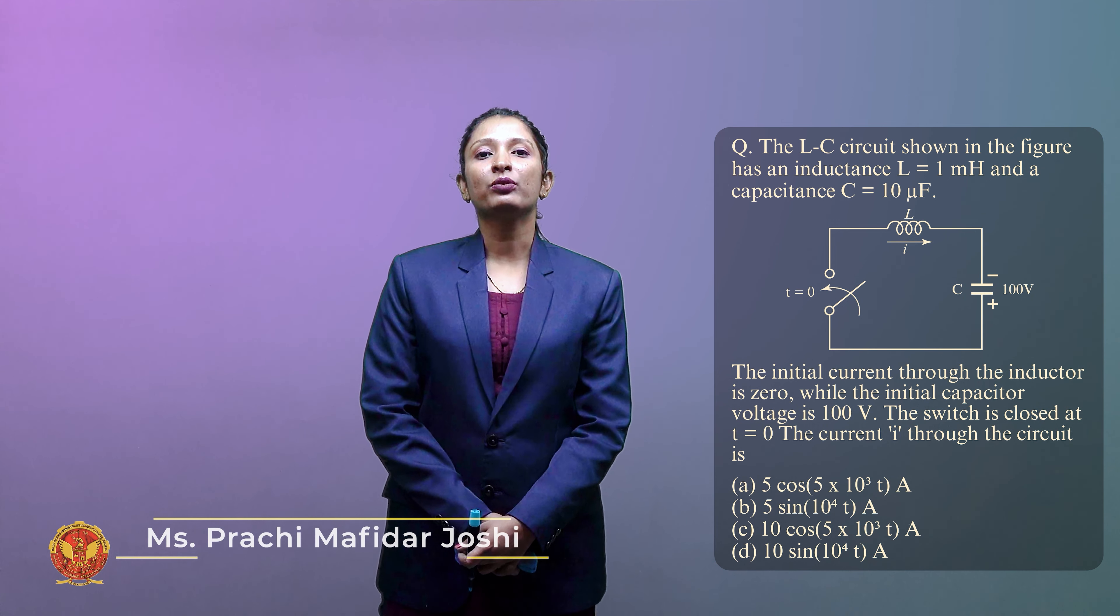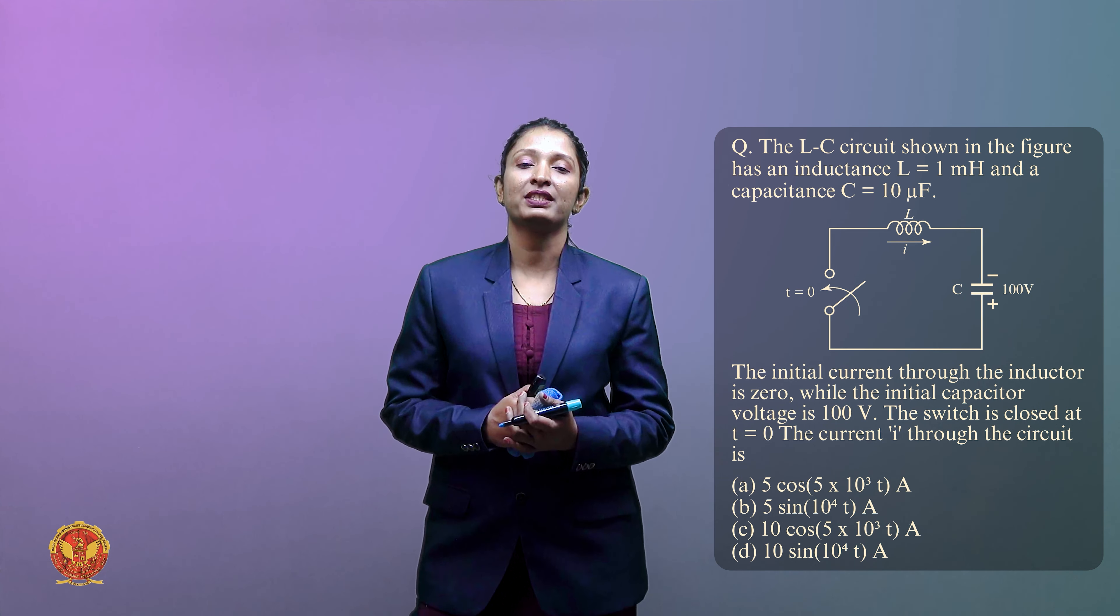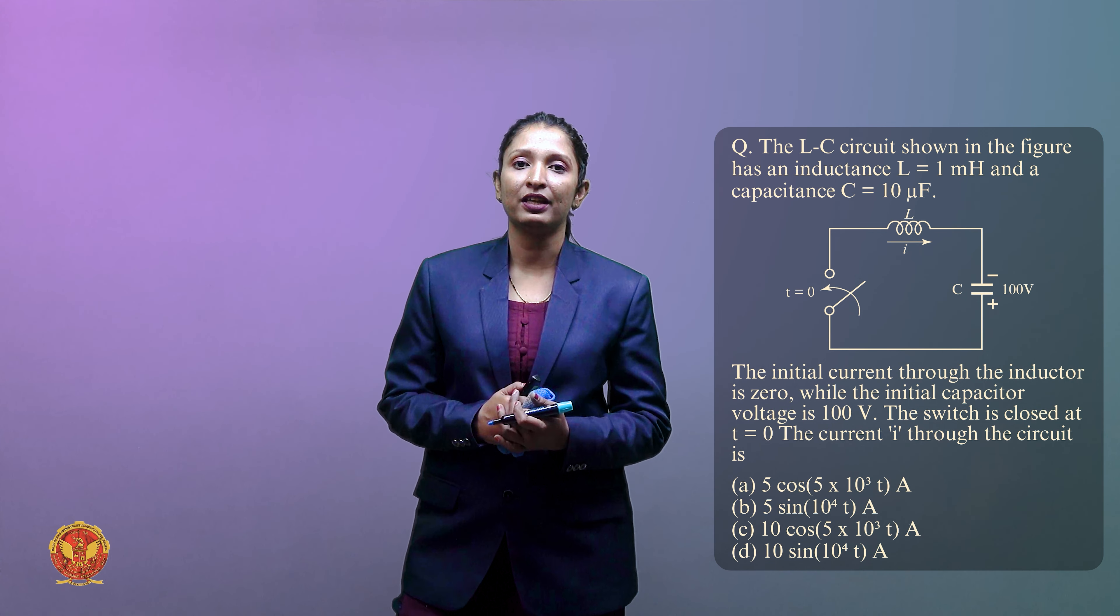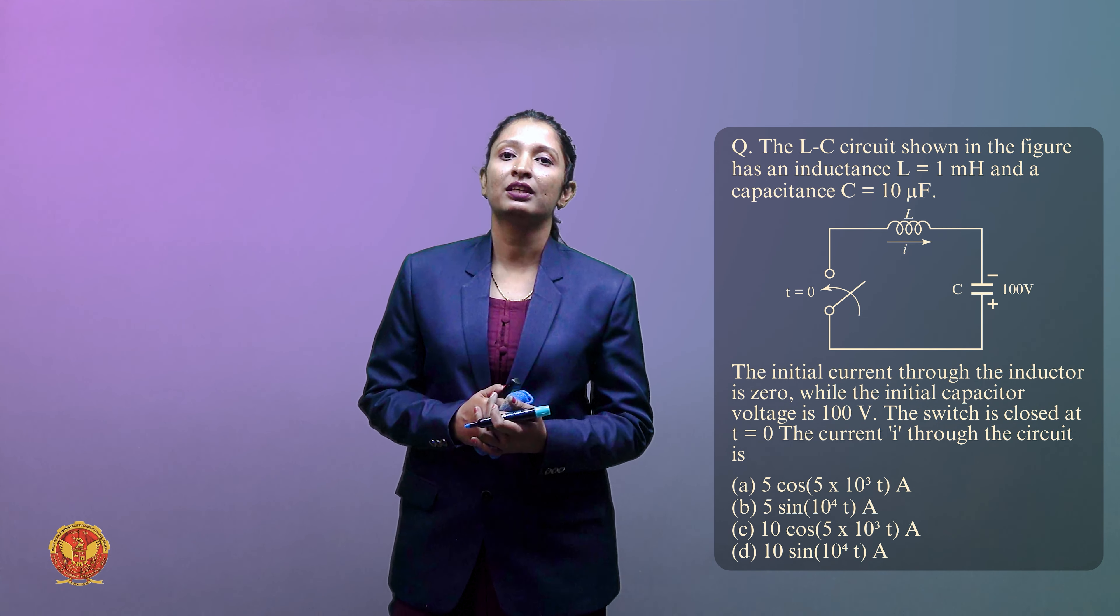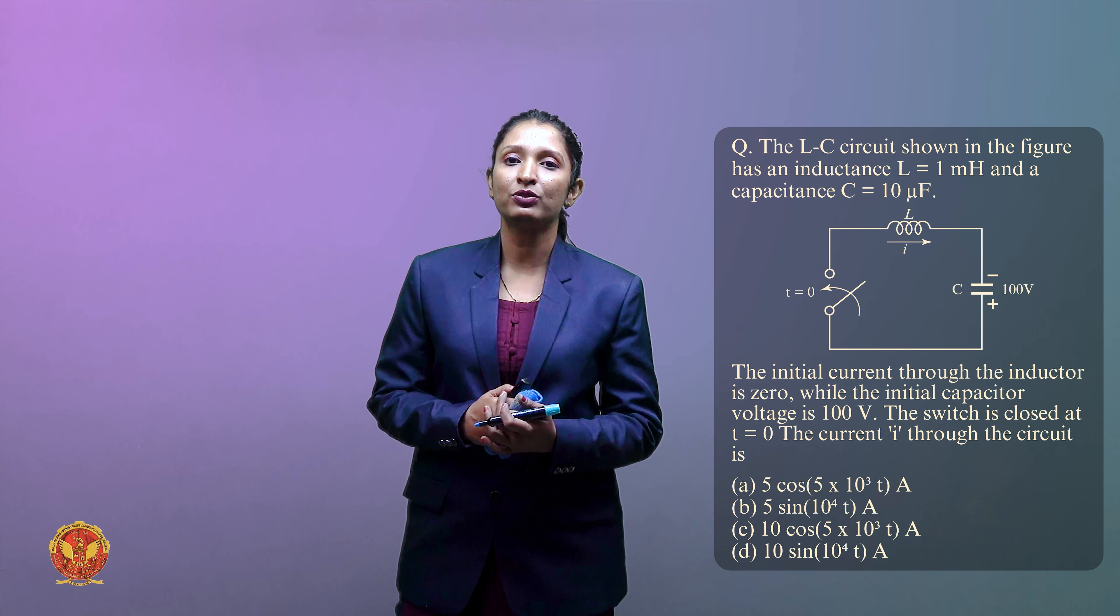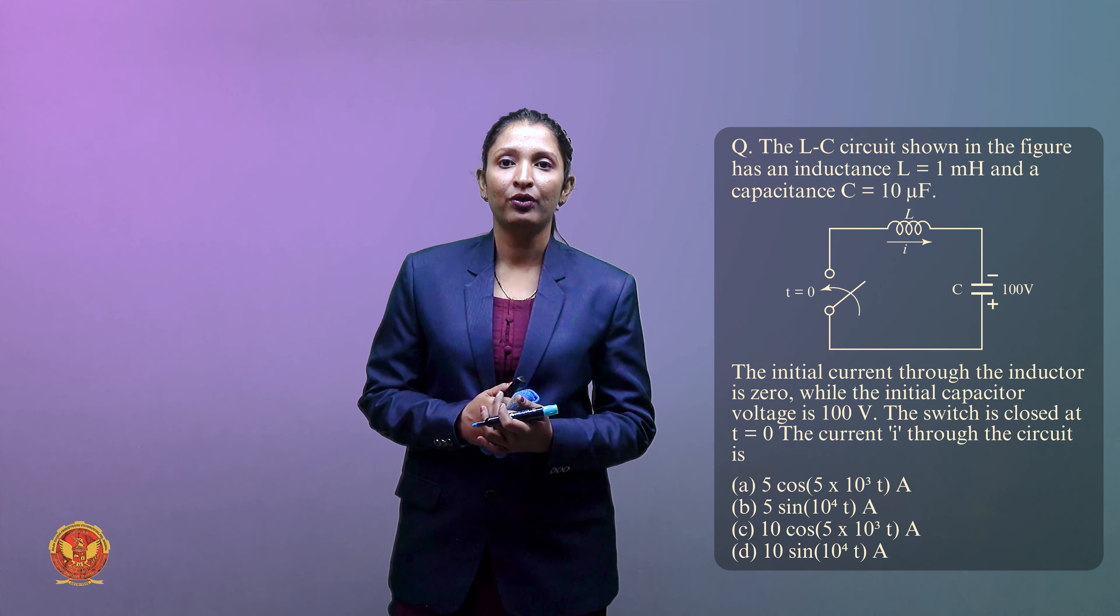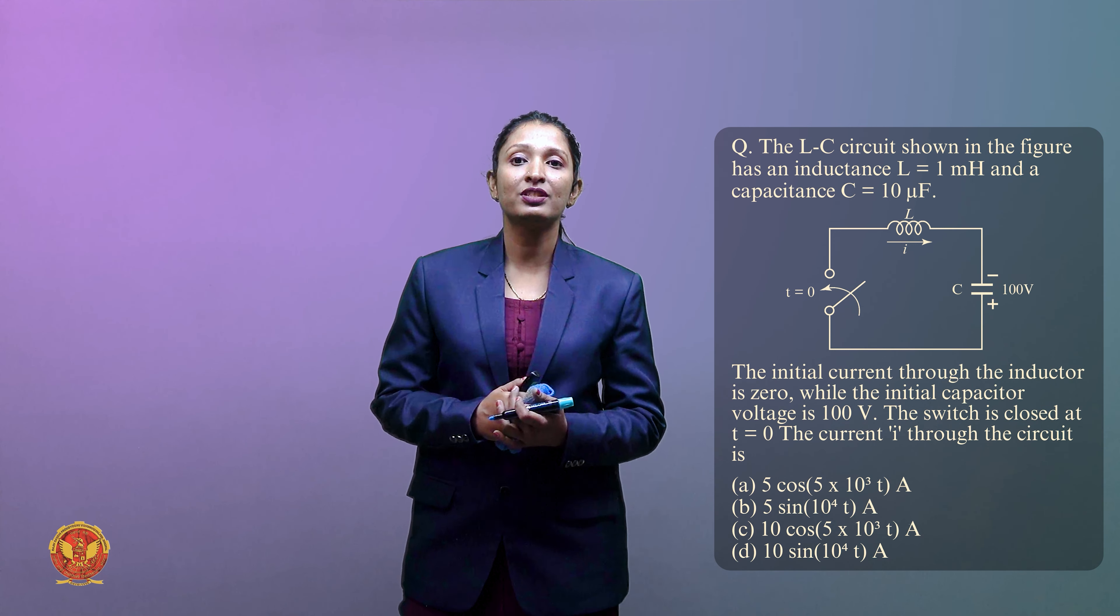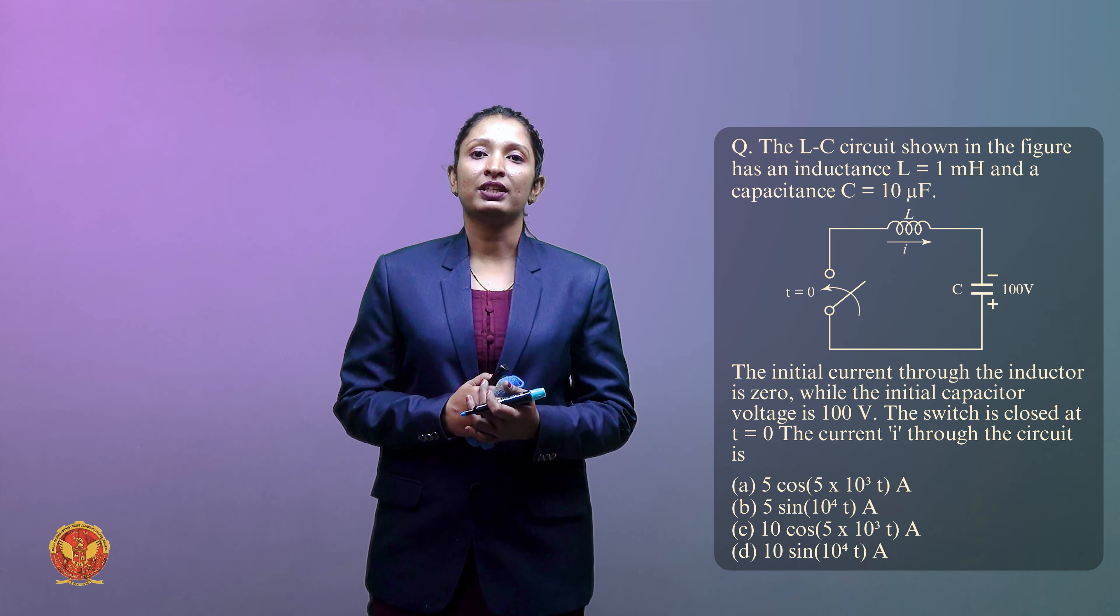The question given hain: the LC circuit shown in figure has an inductance L is equal to 1 millihenry and capacitor C is equal to 10 microfarad. Circuit aapko dikhaya gaya hai jisme ek L hain and C hai. L ka value kita hai 1 millihenry. T ka value, T jo rahe ga woh T equals to zero pe switch jo hai woh close ho ga. The initial current through inductor is zero while the initial capacitor voltage is 100 volt. The switch is closed at T equals to zero. The current I through circuit is...